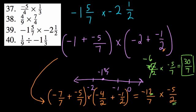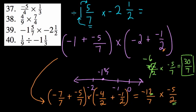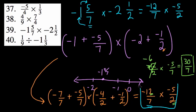Backtracking — we rewrote our mixed numbers as improper fractions by splitting them apart and adding. But there is a shortcut: multiply the denominator by the whole number part and add the numerator. For negative 1 and 5 sevenths: 7 times negative 1 is negative 7, plus negative 5 is negative 12, keeping the denominator 7 — giving negative 12 over 7. For negative 2 and 1 half: 2 times negative 2 is negative 4, plus negative 1 is negative 5 over 2. Same result.